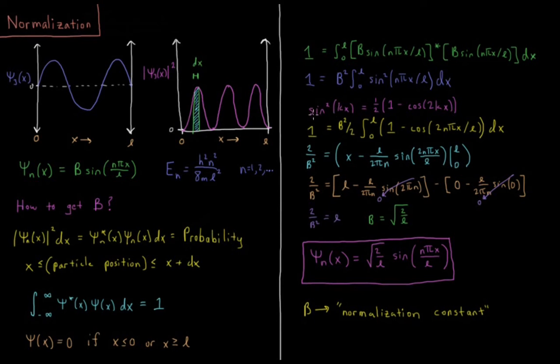So we can use the trick that the sine squared of kx, trigonometric identity, is equal to 1 half times 1 minus cosine 2kx. So this means that 1 is equal to b squared over 2, coming from that 1 half, integral 0 to L of 1 minus cosine 2 n pi x over L dx.